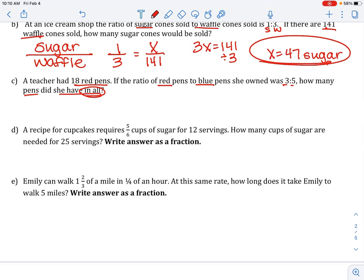We are given an actual number of red pens, and we want to know the total. So red over total is our word ratio. Let's set up our proportion. Let's go back to the original ratio. You had 3 red pens for every 5 blue pens. So, the number of red pens is 3, but the number of total pens right here is 8.